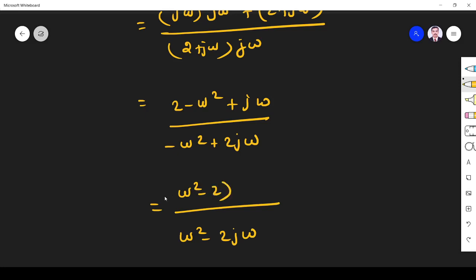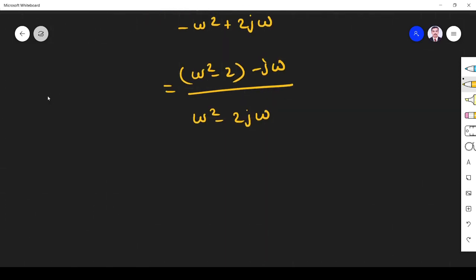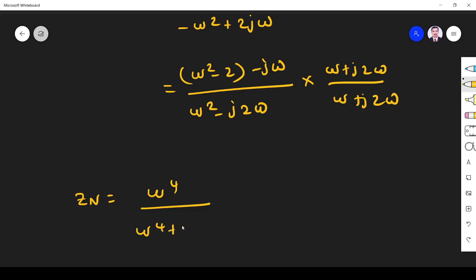...it is (ω² - 2jω). Z_Norton—I split the real and imaginary parts. I can write the denominator as ω(ω² - j2ω), then multiply by (ω² + j2ω), take the complex conjugate and do all the manipulation. After that, what you get is ω⁴ divided by...